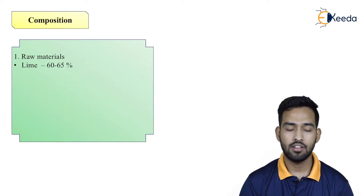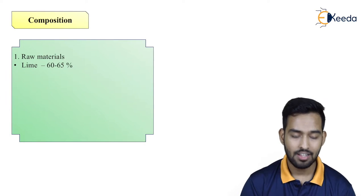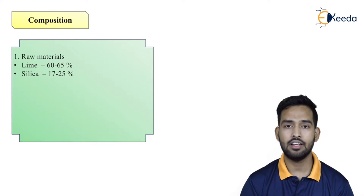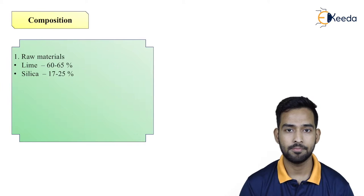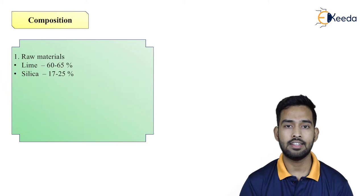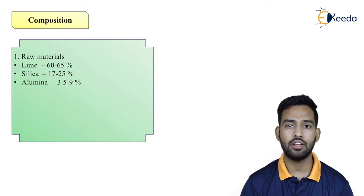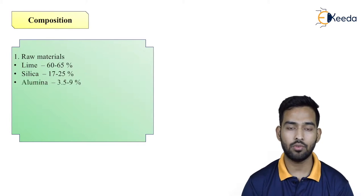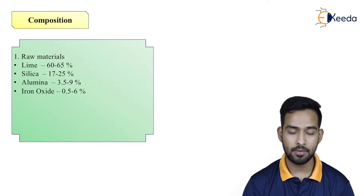In cement, we require raw materials. The first is lime, which is the main raw material in the formation of cement, comprising about 60–65%. Next is silica, which plays 17–25%. Then alumina at 3.5–9%, and iron oxide at 0.5–5%.